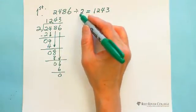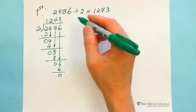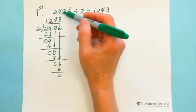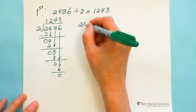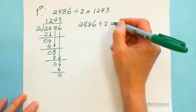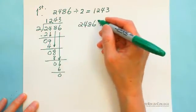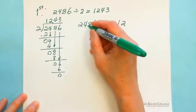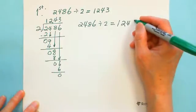So instead of doing it this way, what we can do is make it faster. You just look at all the digits — 2, 4, 8, 6 — all even digits. You just divide each digit: half of 2 is 1, half of 4 is 2, half of 8 is 4, half of 6 is 3. Very quickly — you don't need to do long division!